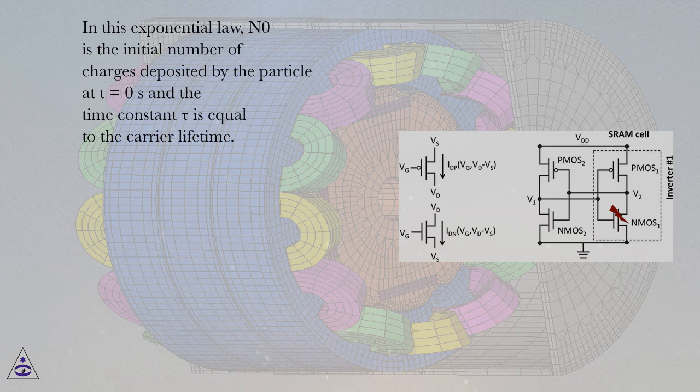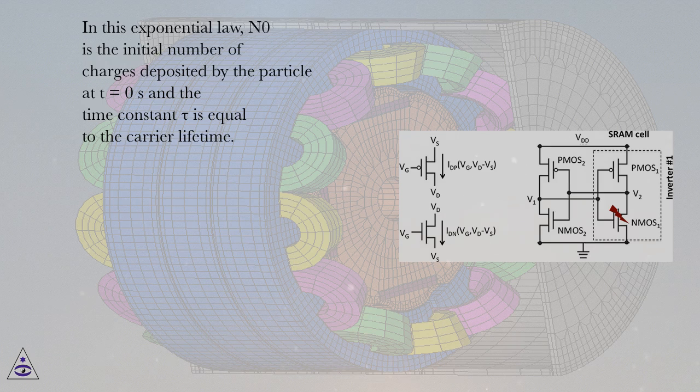In this exponential law, n0 is the initial number of charges deposited by the particle at t equals 0s and the time constant tau is equal to the carrier lifetime.